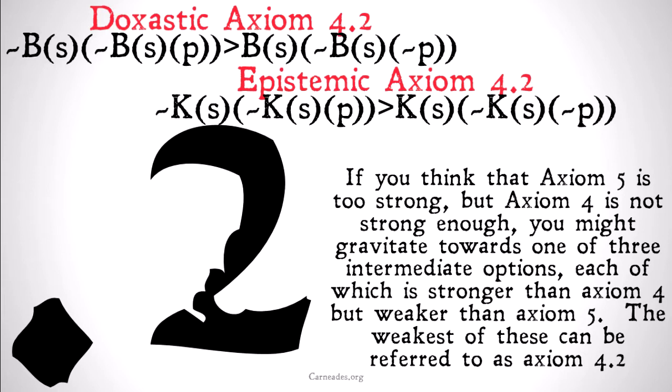If it's not the case that some S believes that P, that means that S does believe that it's not the case that S believes that not P. Or, if it's not the case that S knows that it's not the case that S knows that P, that implies that S knows that it's not the case that S knows that not P.